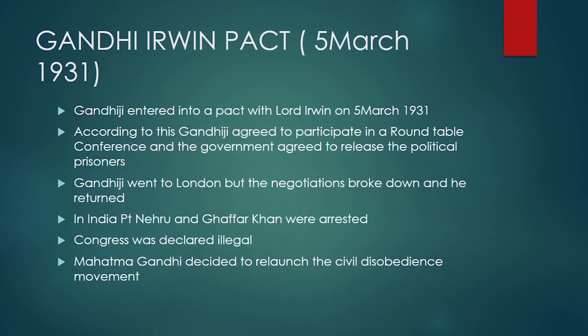Next is the Gandhi-Irwin Pact — a question that can be asked: write a note on the Gandhi-Irwin Pact. It was signed on 5th March 1931. Gandhi-ji agreed to participate in a roundtable conference, and the government agreed to release political prisoners. Gandhi-ji went to London to attend the roundtable conference, but the negotiations broke down and he returned. When he returned, he was arrested in India and Congress was declared illegal.